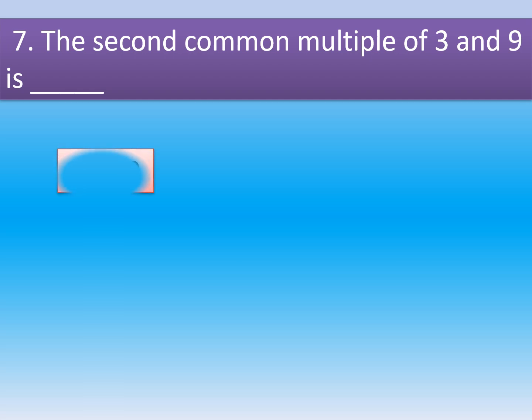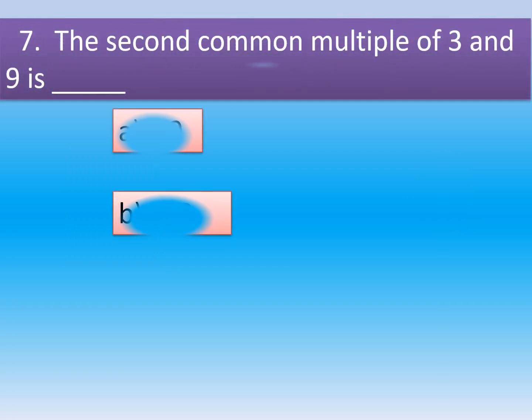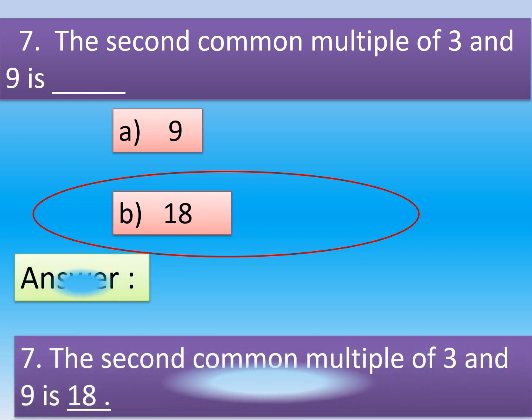Question number 7: The second common multiple of 3 and 9 is dash. Option A, 9. Option B, 18. The correct option is Option B, 18.